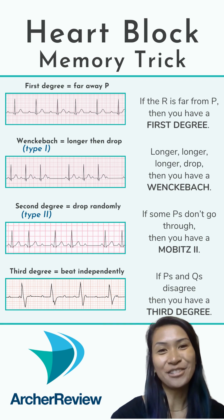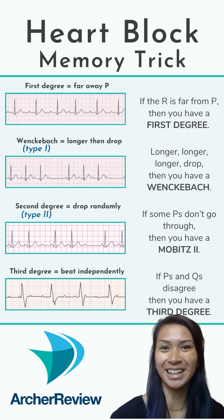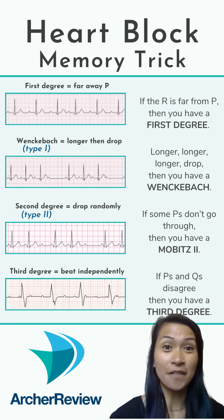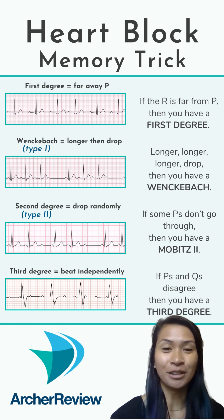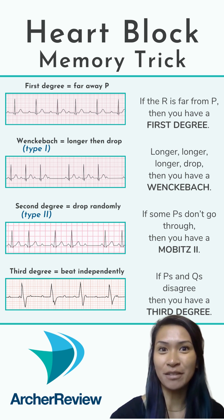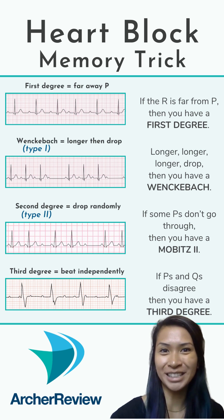Heart blocks can be challenging, but you can use this poem to help you remember the different kinds. If R is far from P, then you have a first degree. Longer, longer, longer, drop — then you have a Wenckebach block. If some Ps don't go through, then you have a Mobitz 2. And if Ps and Qs disagree, then you have a third degree.